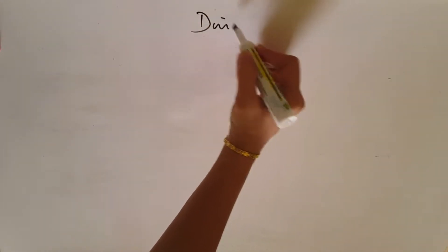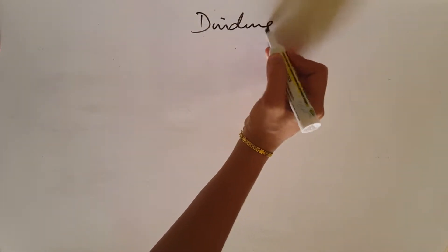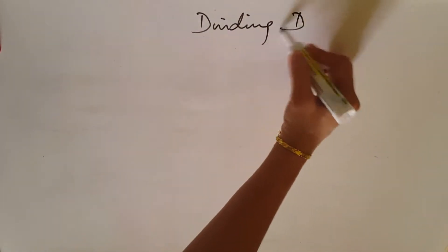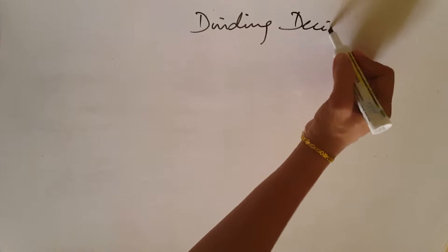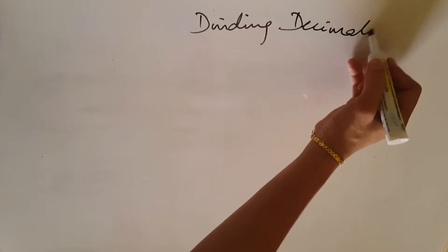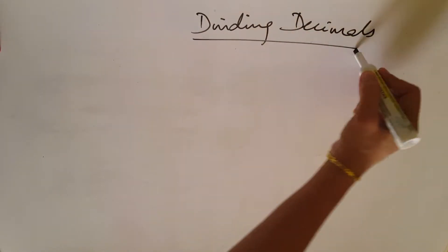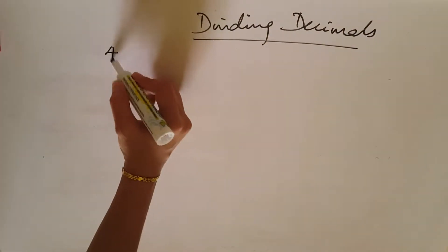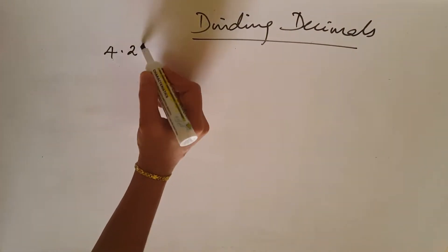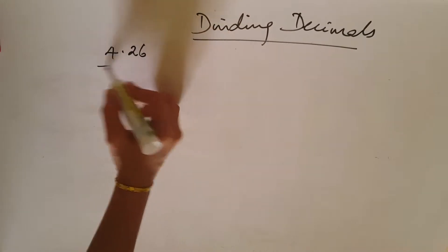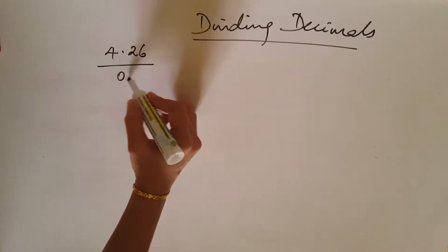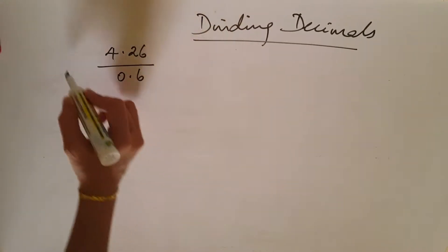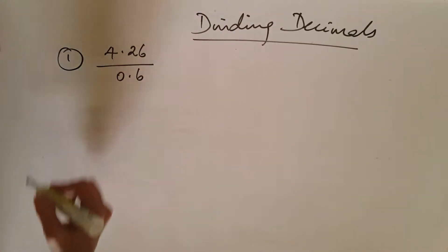Today we are going to learn about dividing decimals. We will see 4.26 divided by 0.6. This is the first question.